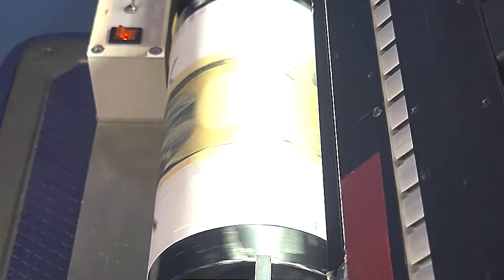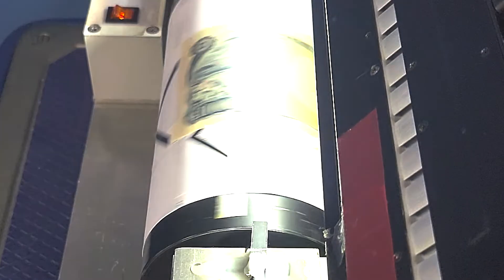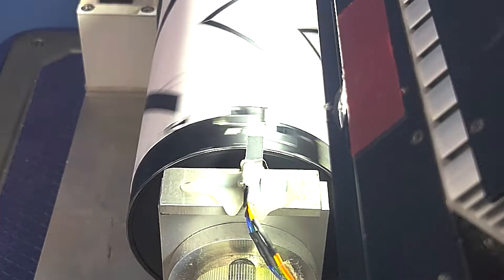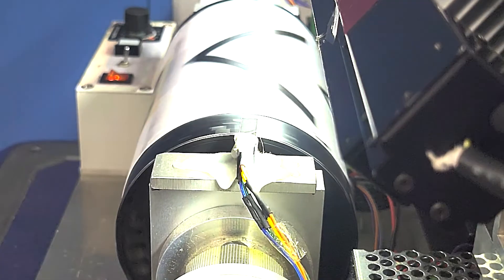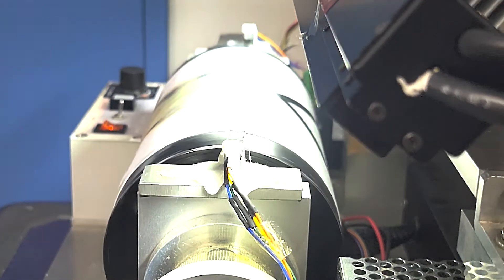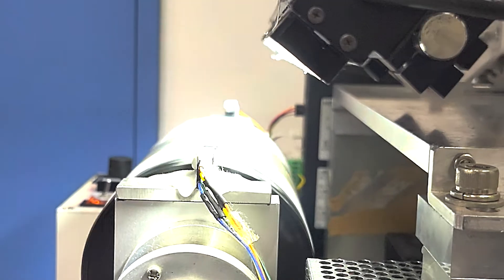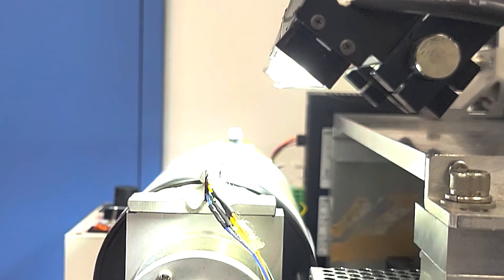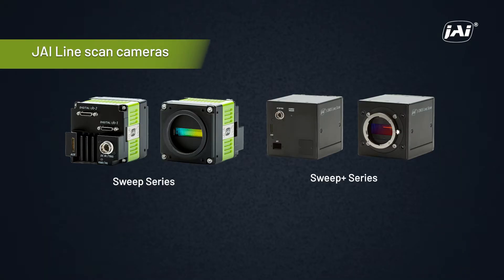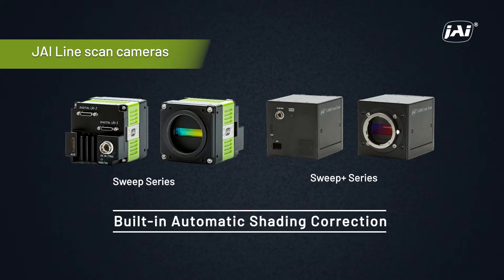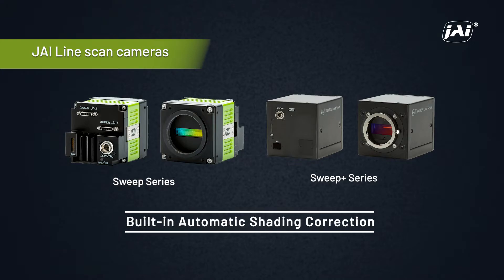In addition to mechanical vignetting, the lighting being used might introduce some additional non-uniformity to the image. To compensate for non-uniformities in lighting, JAI line scan cameras include a built-in automatic shading correction function. In this demo, we will show you how to use this.